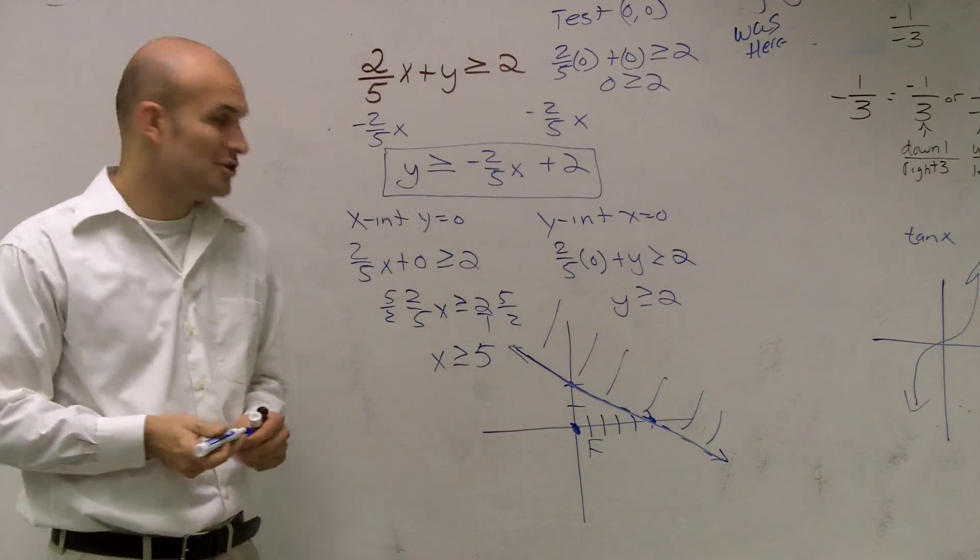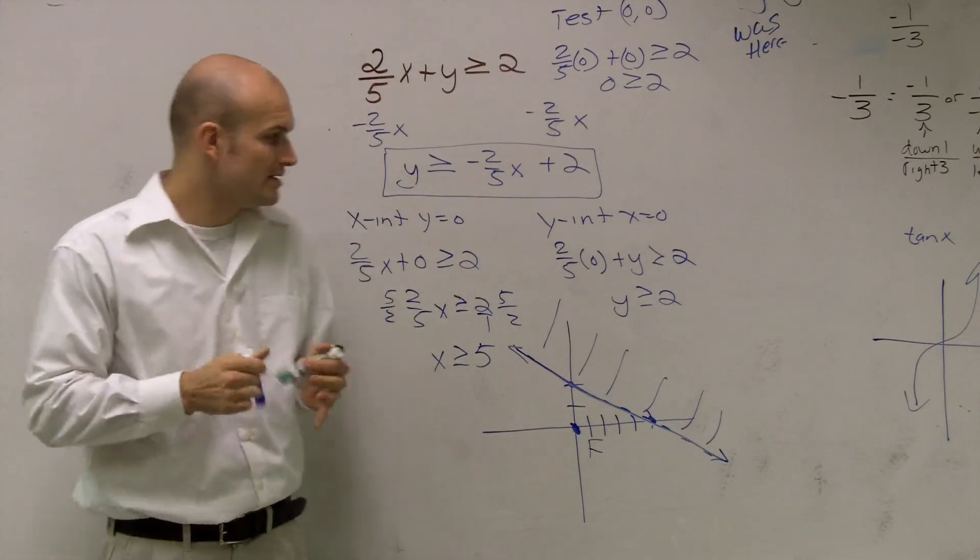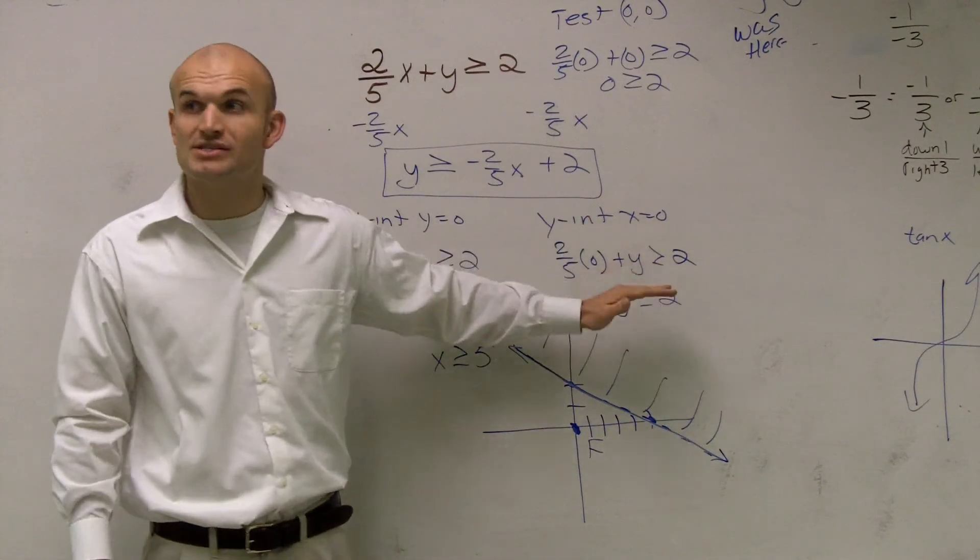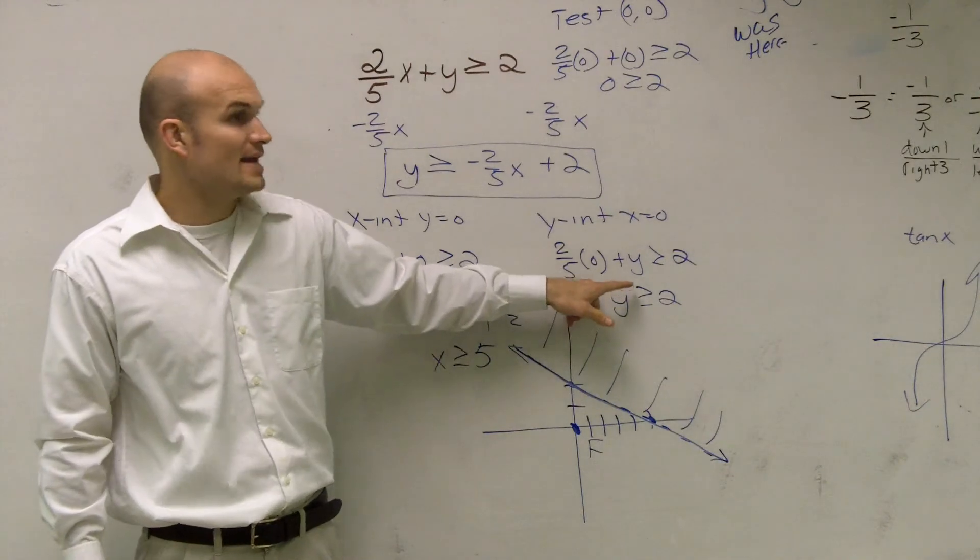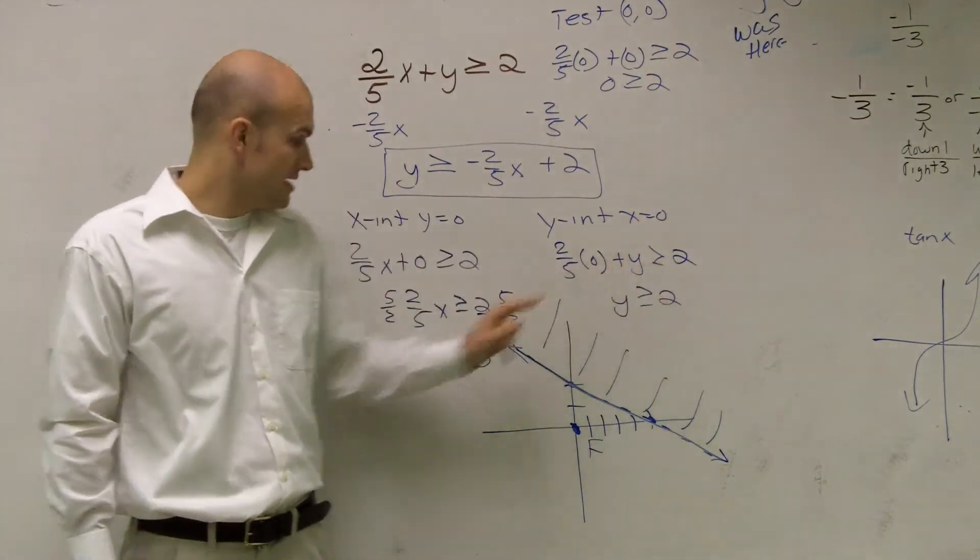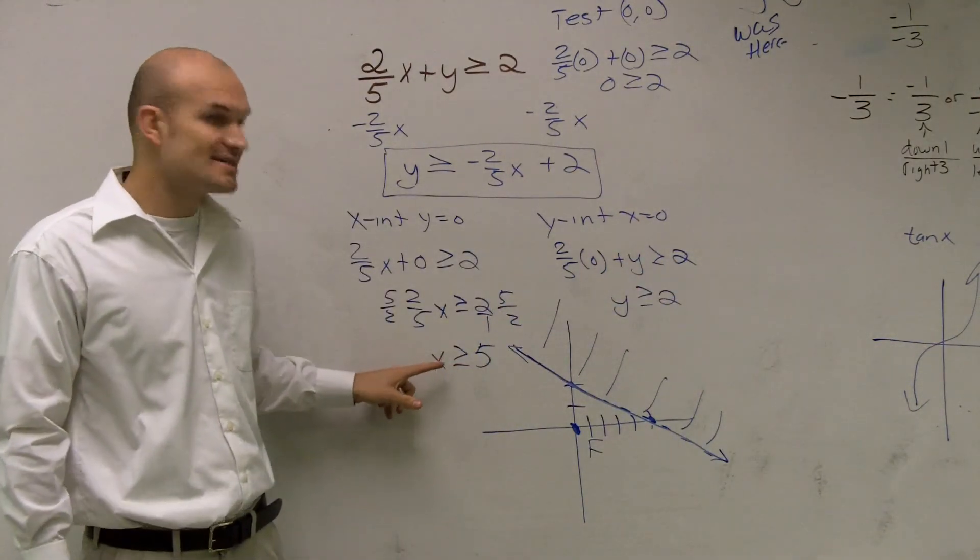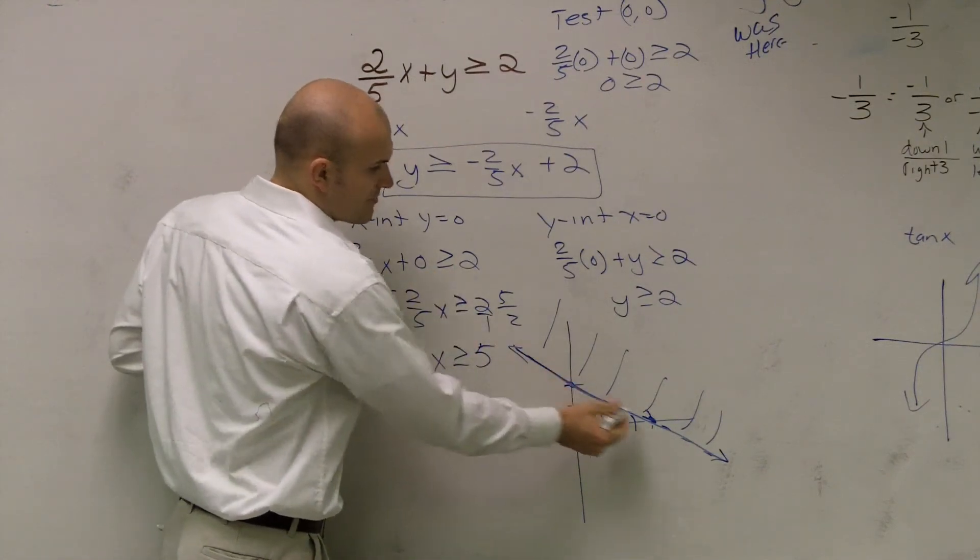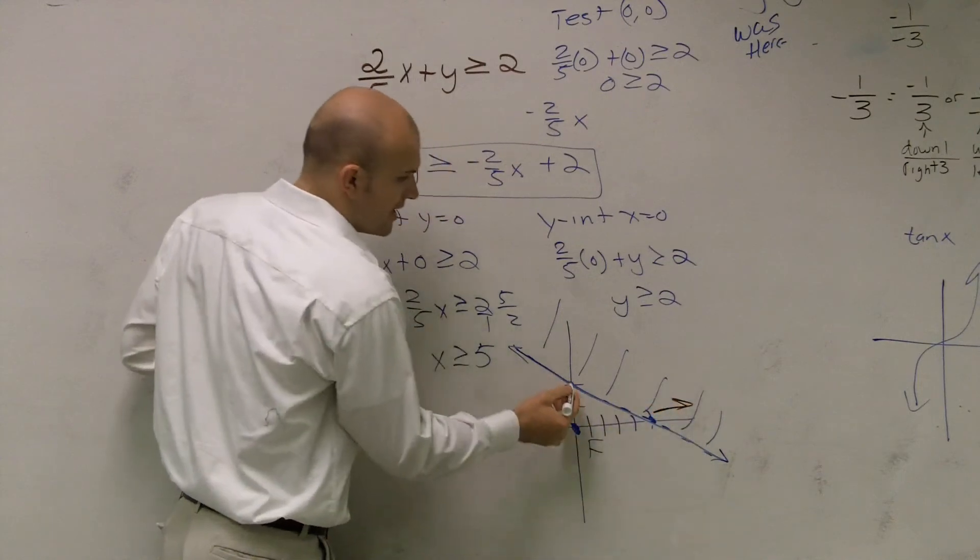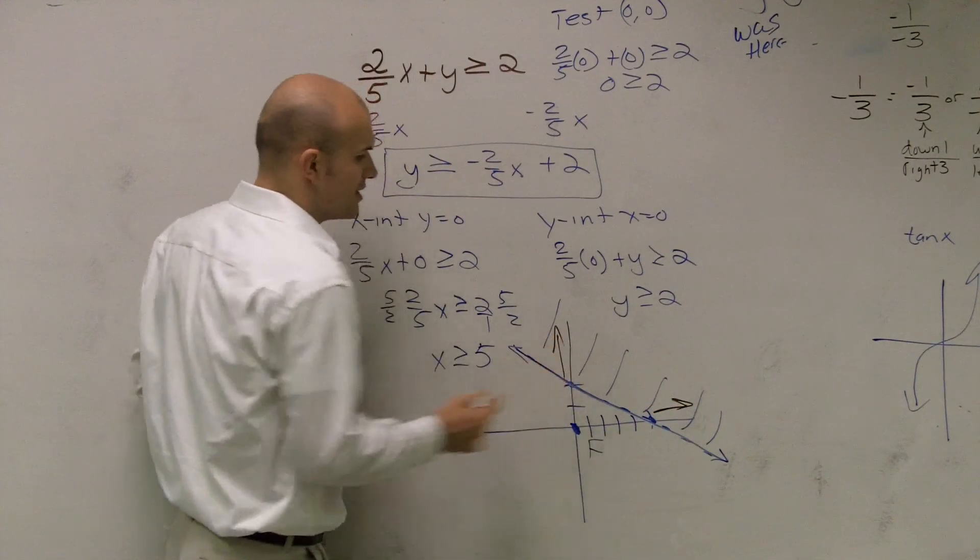Now the other way you guys can kind of look at this is also think about it. When you solve for your x-intercept, here's another way to do it. Look, this says all values of y have to be greater than 2, and this says all values of x have to be greater than 5. So what that really means is our x values have to be greater than 5, and our y values we want to be greater than 2.